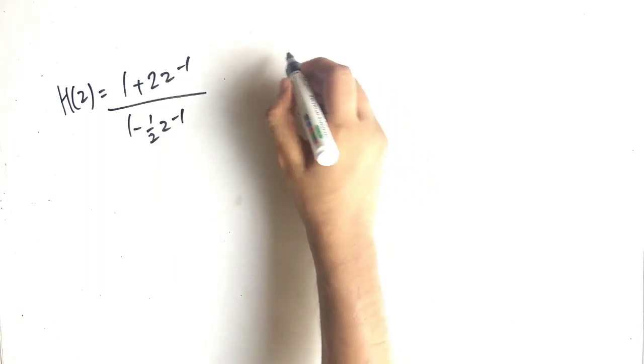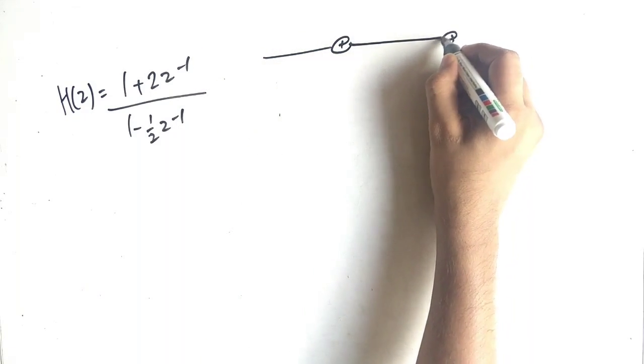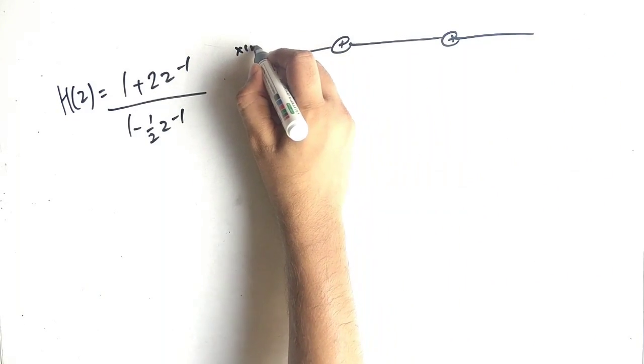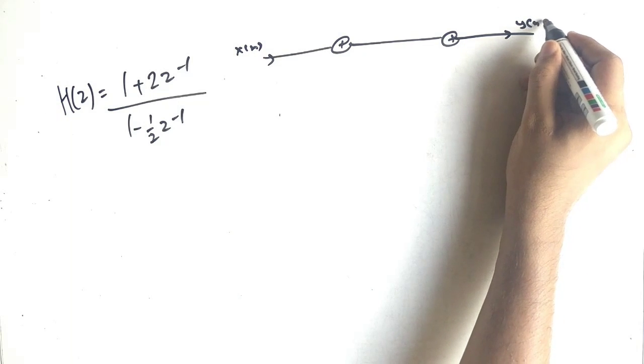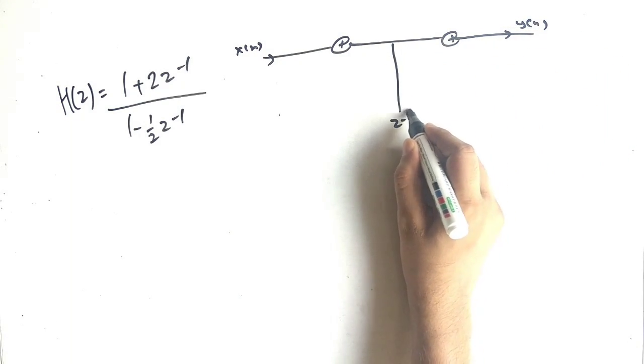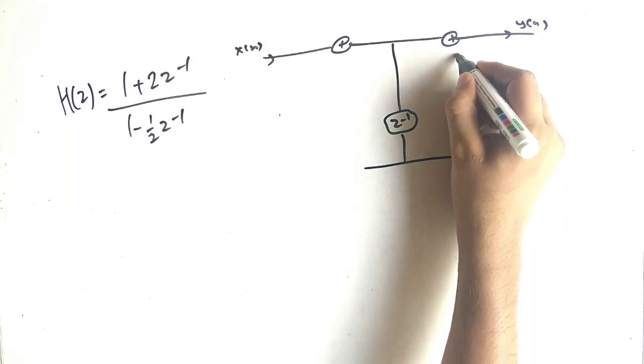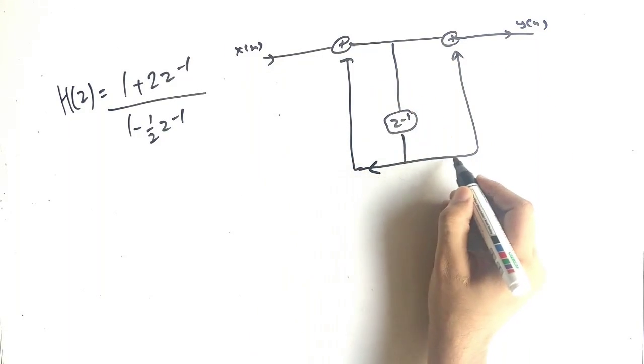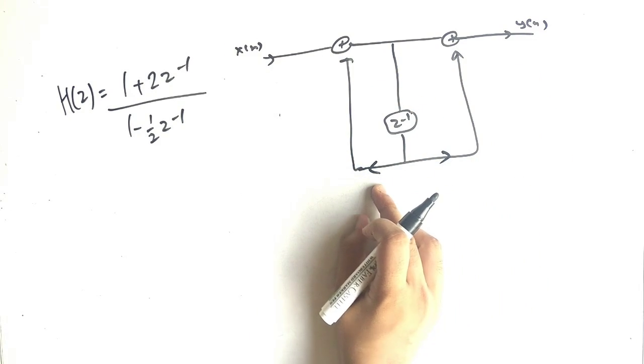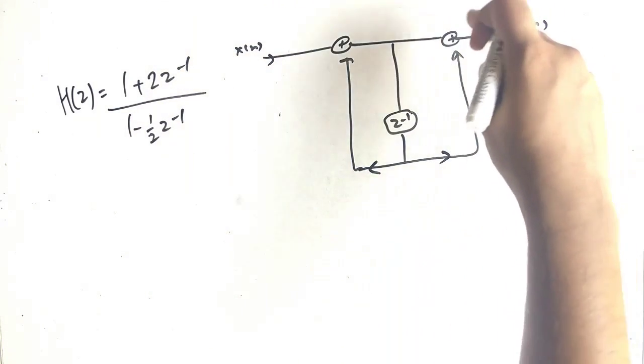This is a very simple basic structure. We have x(n) on the left-hand side, y(n) on the right-hand side. We have the first delay term and the multipliers here. This is the pole area, whereas this is the zero area.